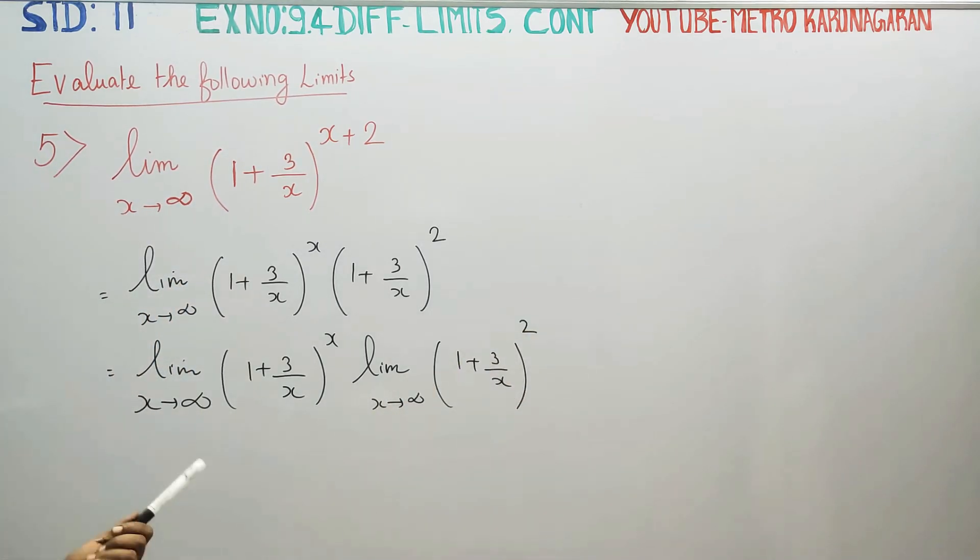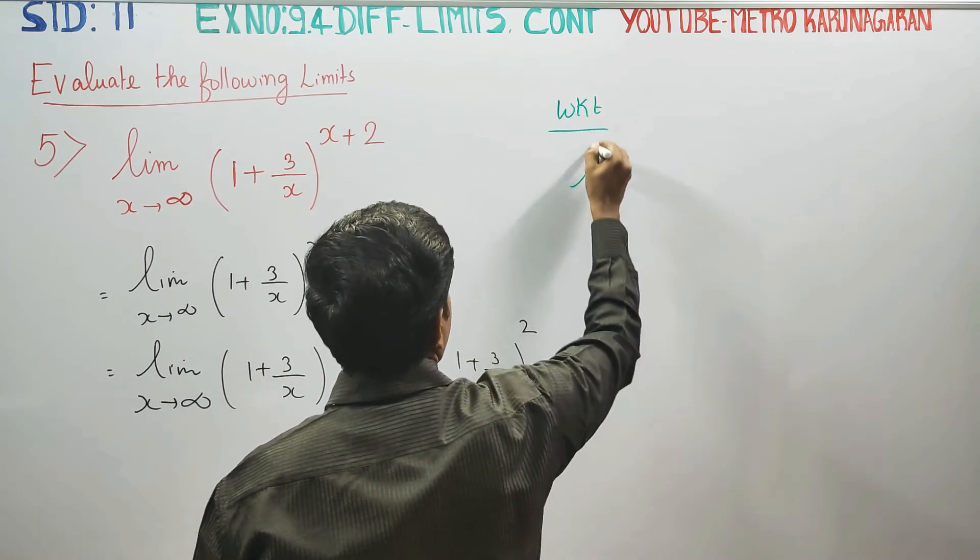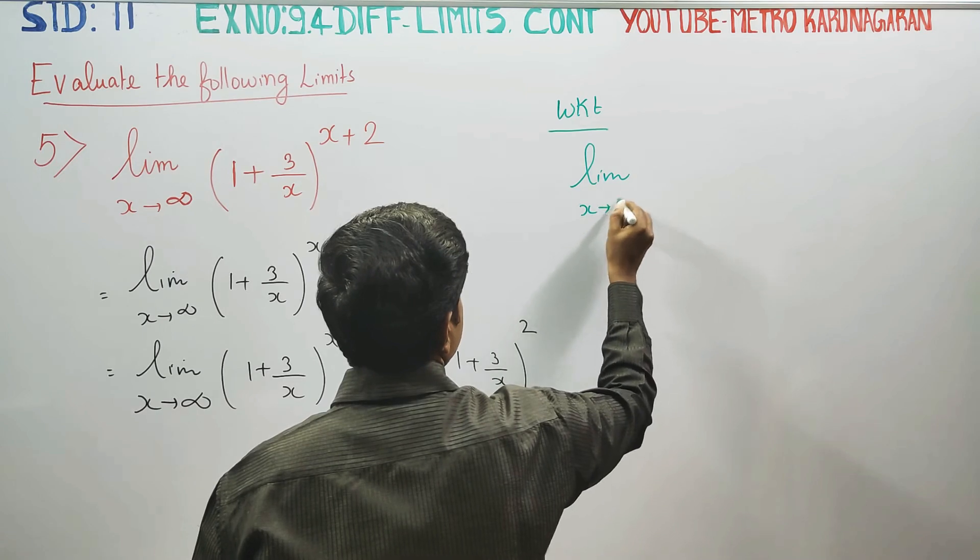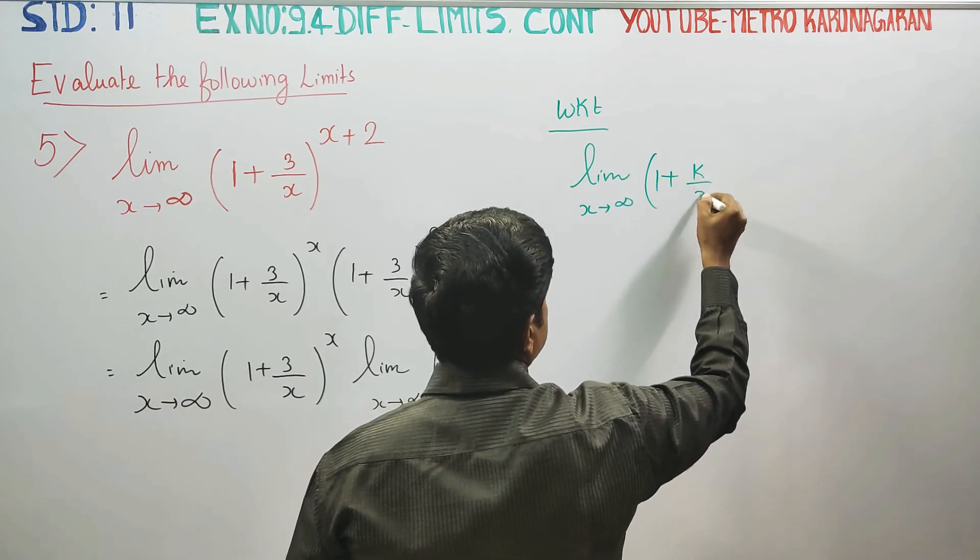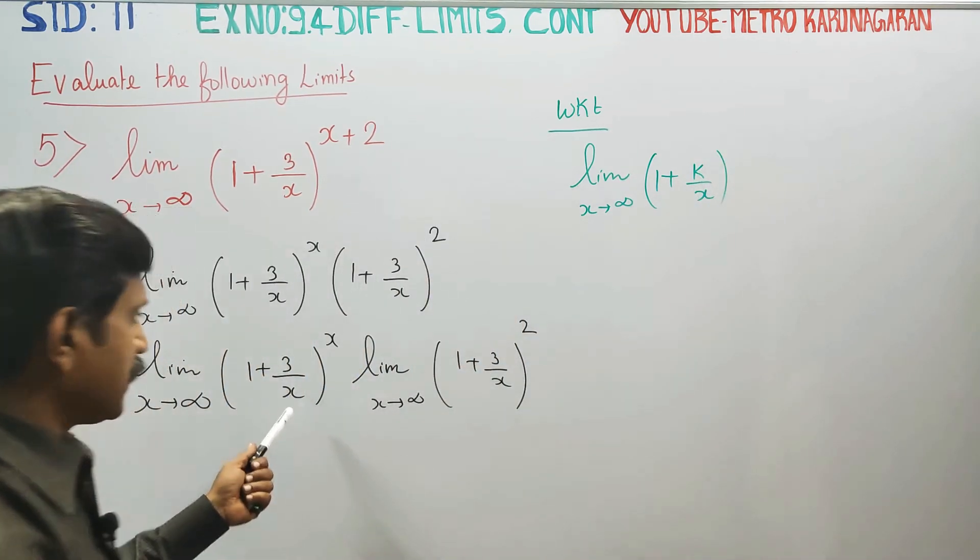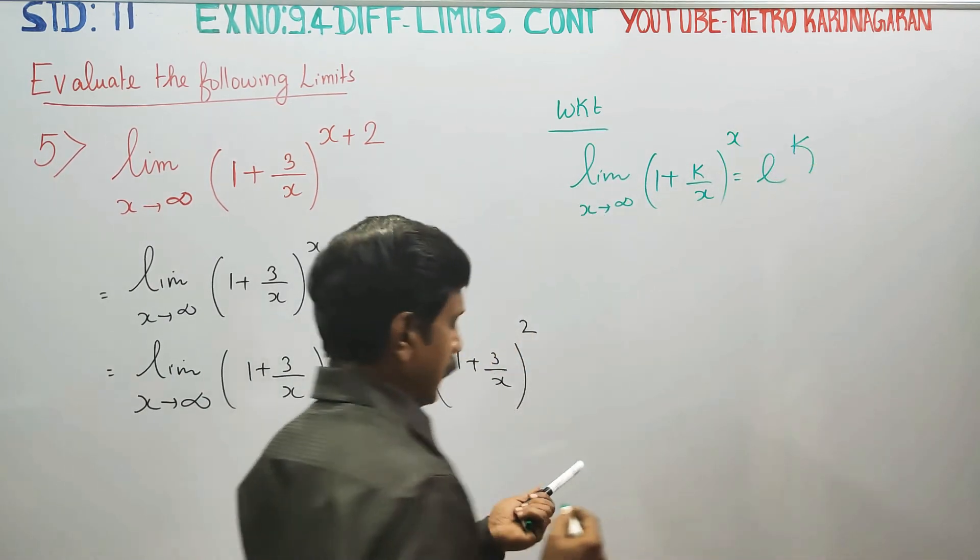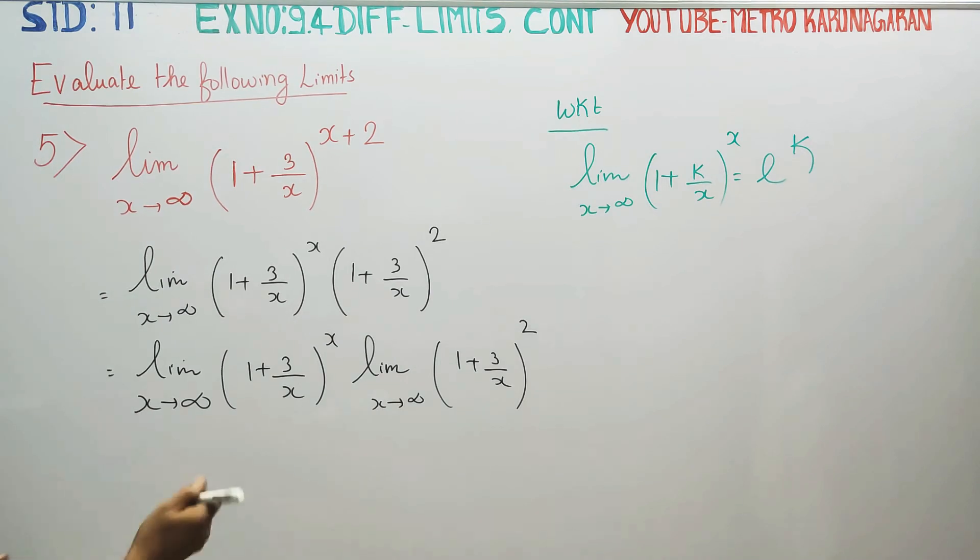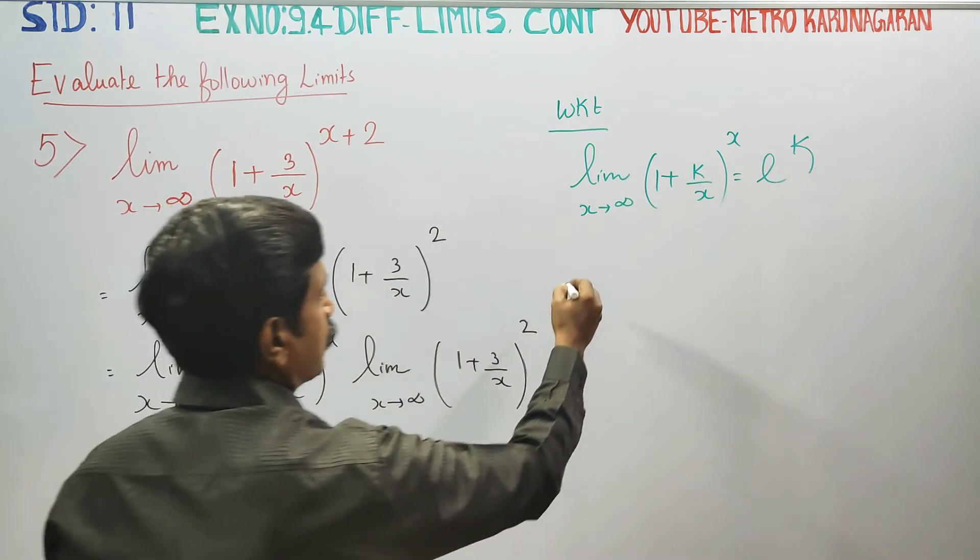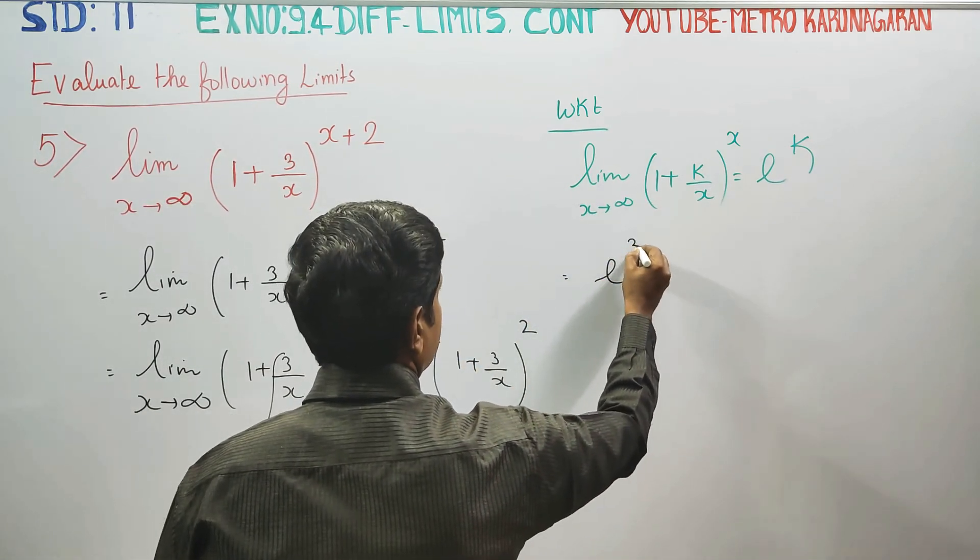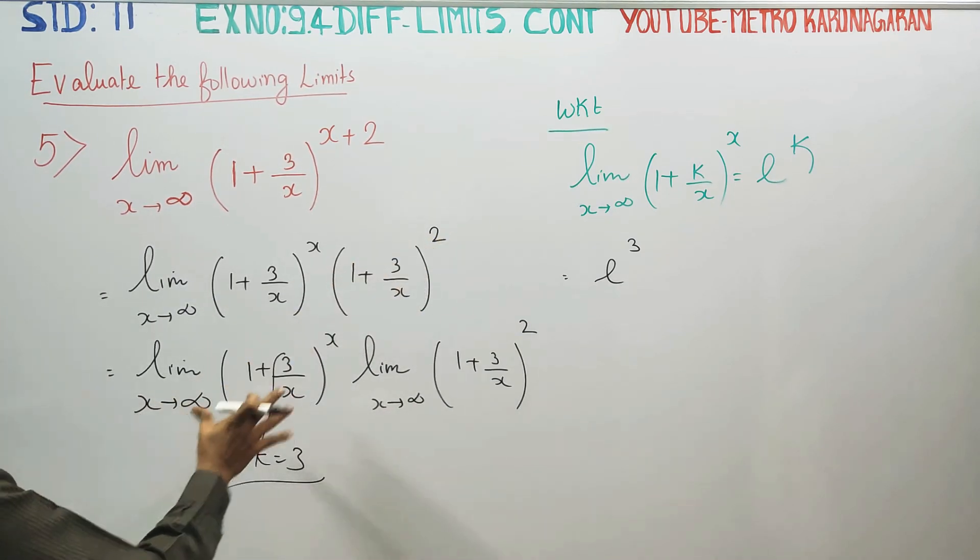There is a ready-made formula for this. We know the result from the book: what is the limit when x turns to infinity of (1 + k/x)^x? This equals e^k. This standard formula matches our problem.